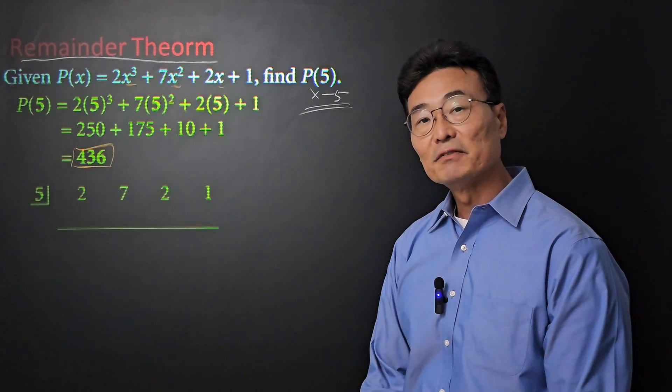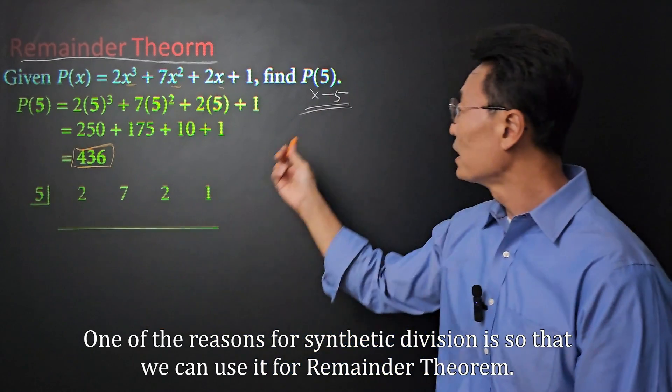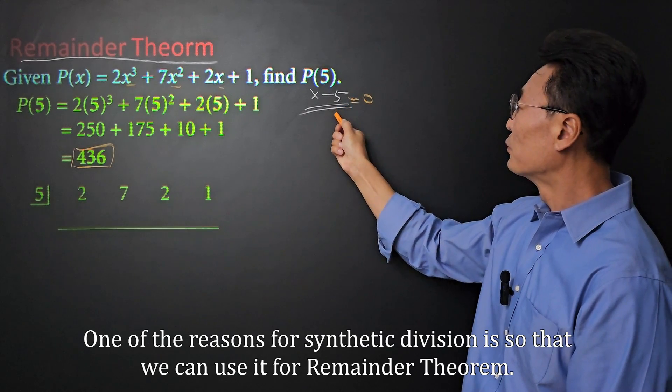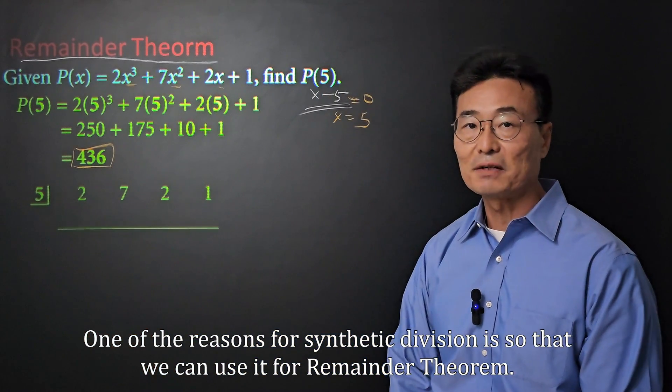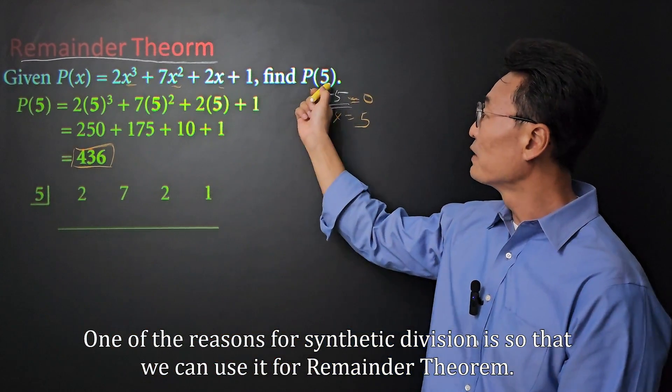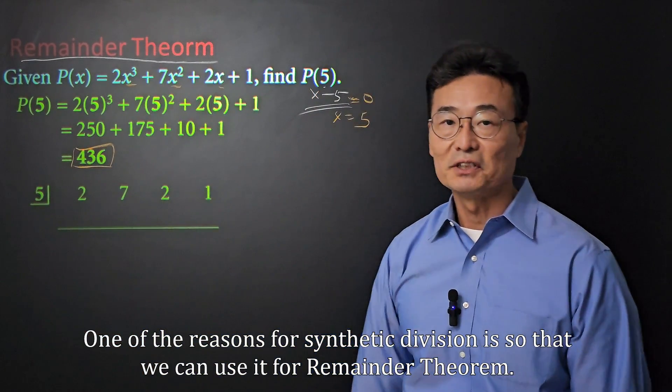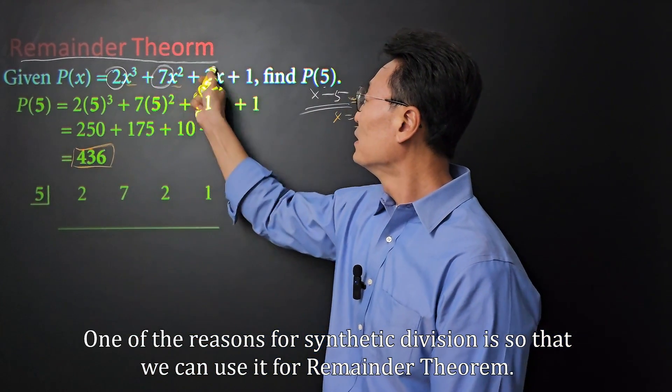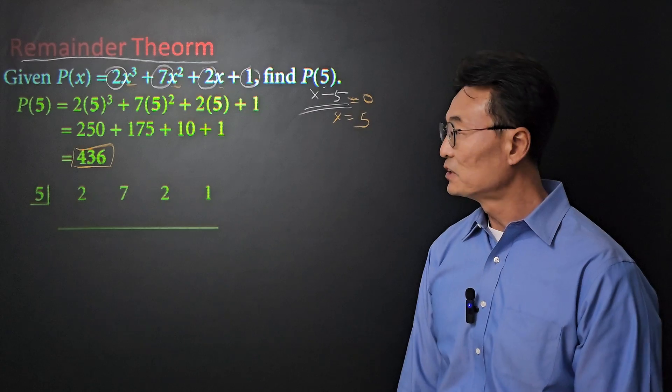Or, as I mentioned earlier, using the remainder theorem, we're going to be dividing the function by x minus 5. So, synthetic division is the way to go. Notice we put a 5 here. Since we're dividing it by x minus 5, we set that equal to 0, and we get x equals to 5. For that reason, we have a positive 5 right there. Or, think of it this way. If we're looking for P of 5, we're just going to put a 5 there for synthetic division. And we have the 2, the 7, the 2, and the 1 listed here, just as we did before.